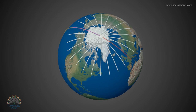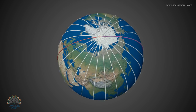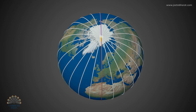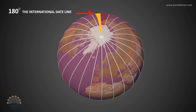Earth is divided into 24 time zones. The time at 0 degrees longitude is called the Greenwich Mean Time or the Coordinated Universal Time. The 24 time zones extend east and west around the globe for 180 degrees to the International Date Line from the Prime Meridian.